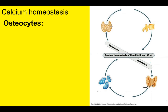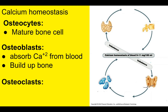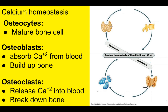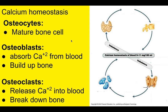Osteocytes are mature bone cells embedded in the bone structure that carry on normal metabolism. Osteoblasts pull calcium out of the blood and use it to build more bone tissue — they build up the bone. Osteoclasts release calcium into the blood by breaking down bone tissue. Osteoblasts and osteoclasts are critical in calcium homeostasis.